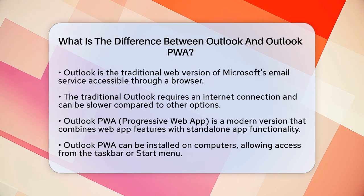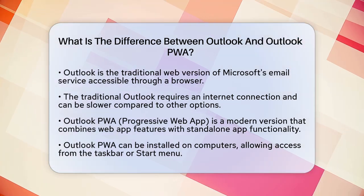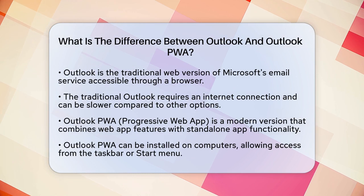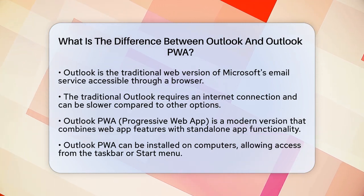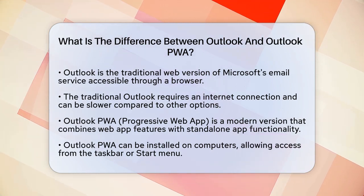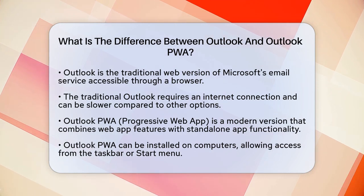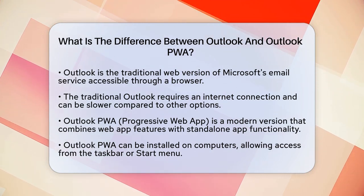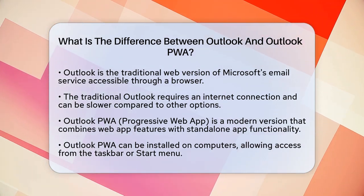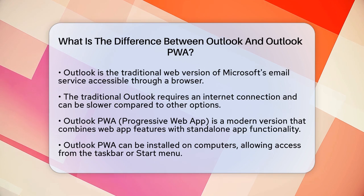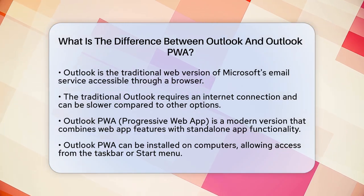First, let's talk about the traditional Outlook web version. This is what you access through your browser, and it's been around for a while. It allows you to manage your emails, calendar, and tasks, but it has some limitations. For instance, you need an internet connection to use it, and it can be slower and less responsive compared to other options.